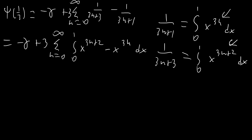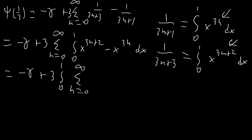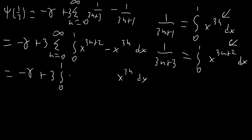Next, we exchange the summation and the integration. This is interesting because usually we have the sum on the inside and bring it outside to do an easier integral — like when we find the power series of some function. However, in this case we actually have the integral on the inside and bring it outside. We reorganize the integrand as x squared minus one times x to the three n. Since x squared minus one has nothing to do with the sum, we factor that out, giving us x squared minus one times the sum from n equals zero to infinity of x to the three n.